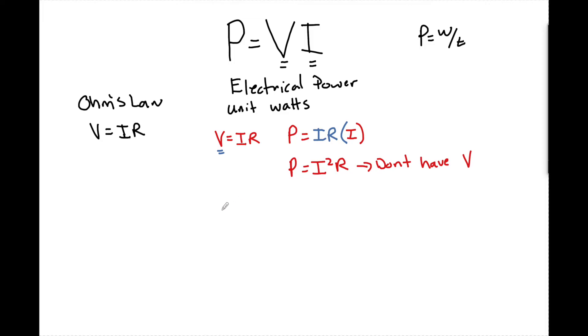Now the same can be done because we know that I is equal to V over R. So if I look at that power formula I can now say P equals V times the substitution for I which is V over R to now get a new power formula that's equal to P equals V squared over R. So this is how we are going to solve for power when we don't have current.